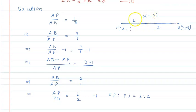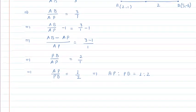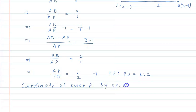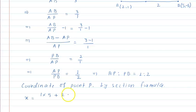Now to find the coordinates of P, we use the section formula. The ratio AP to PB is 1 to 2. To find the X coordinate of P: X equals (1 into 5 plus 2 into 2) divided by (1 plus 2).